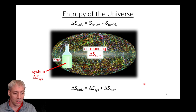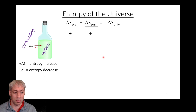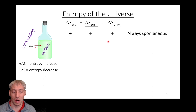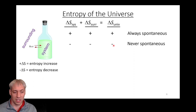For our chemistry class, we talk about a closed system with a fixed volume that exchanges heat — that's our system — and everything else is the surroundings. Delta S system plus delta S surroundings equals delta S universe. If we have a positive delta S system and positive delta S surroundings, the entropy of both went up, so delta S universe is positive — it's always spontaneous. If both are negative, delta S universe is negative — this never happens, it's never spontaneous.